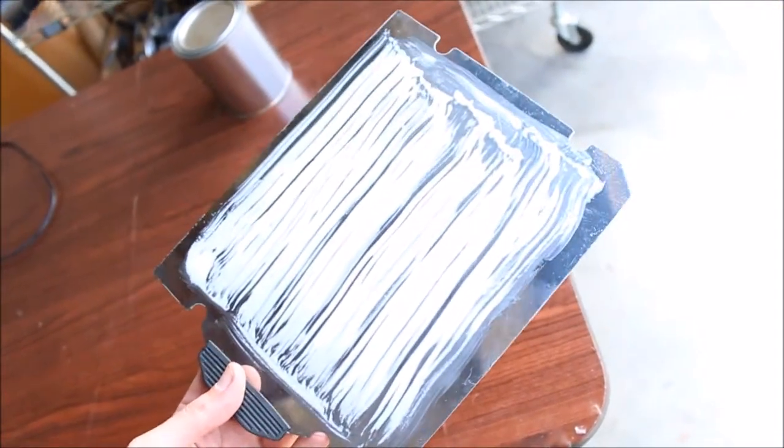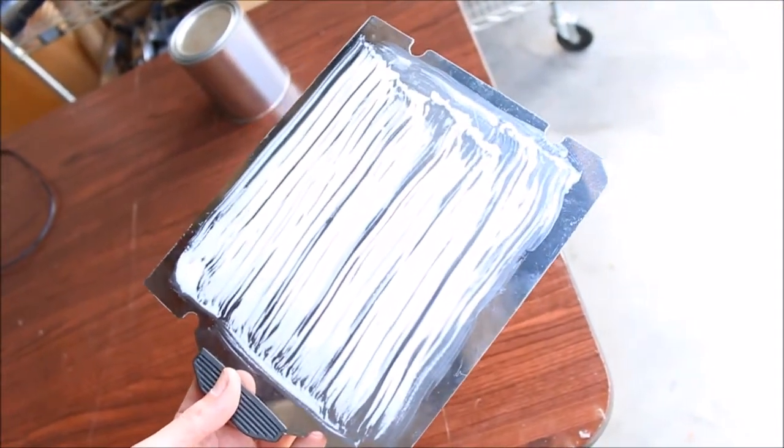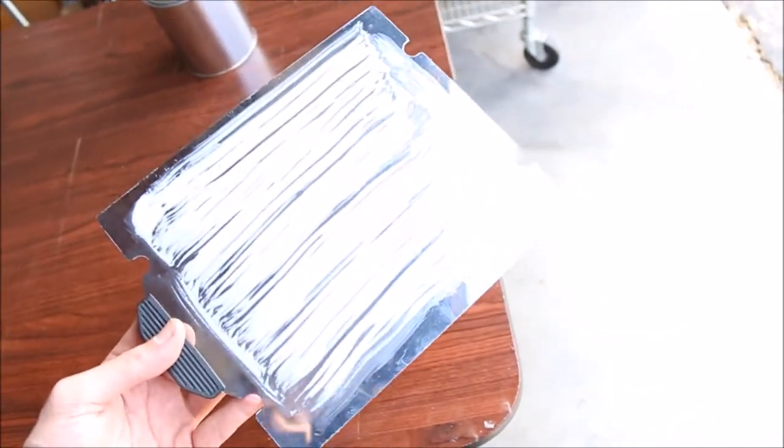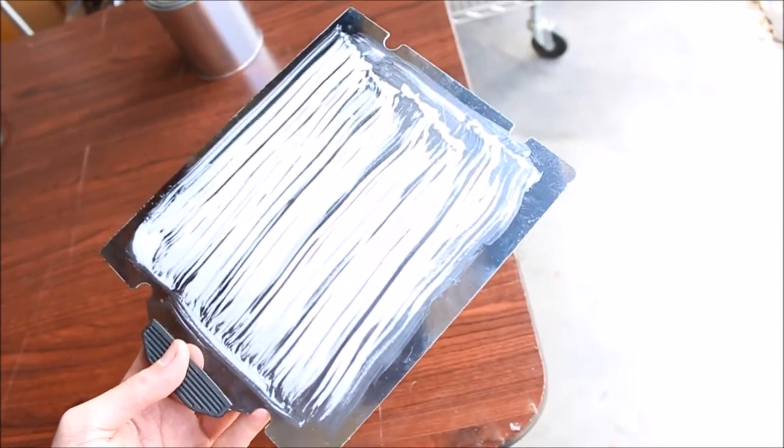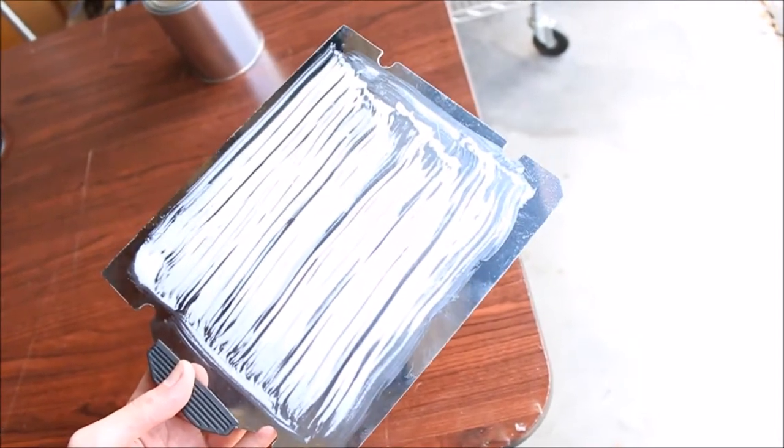You can run temperatures at 100 to 110 degrees Celsius, and you'll just get really exceptional adhesion for ABS, HIPS, and ASA. And then when it cools down, it's going to pop off really easily. It'll come off nice and clean.